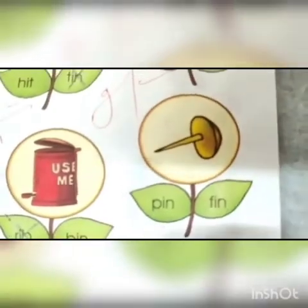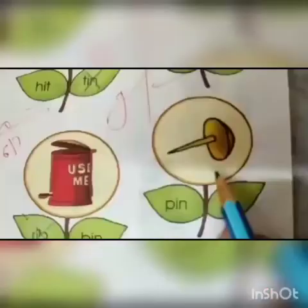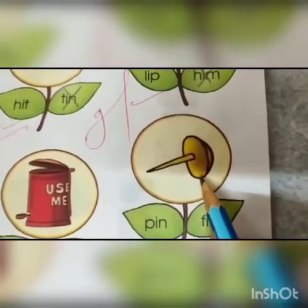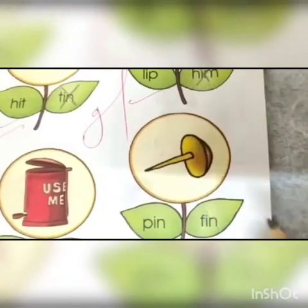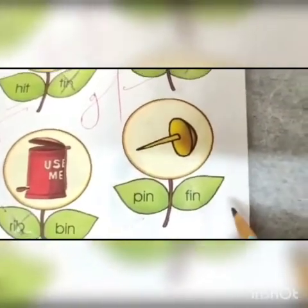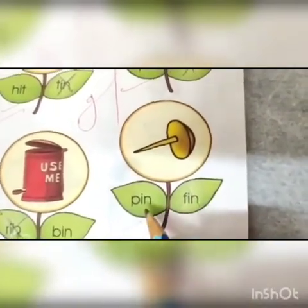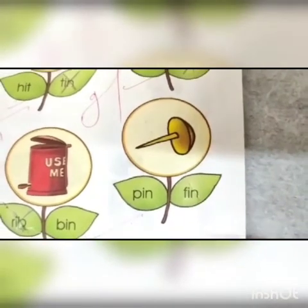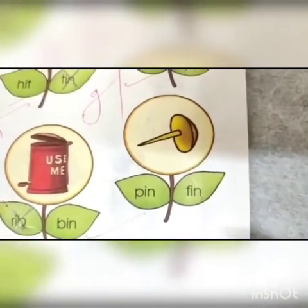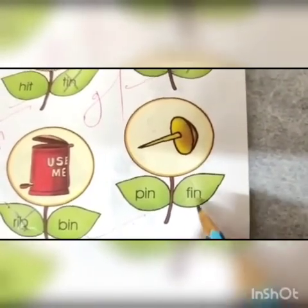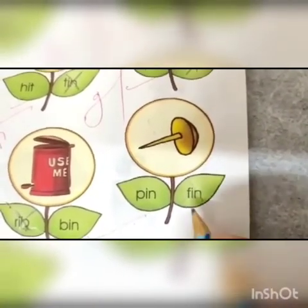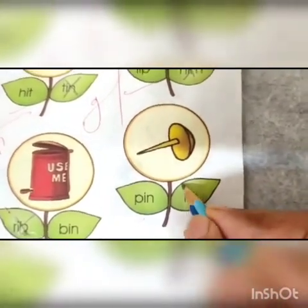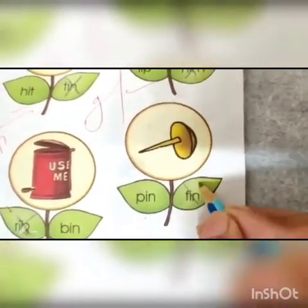Let's go to the next picture. Which picture is this? This is a bin. Now read the words given in the leaves: pin, fin. Which word does not belong to the picture? Fin. Now you will close the word fin.